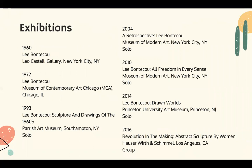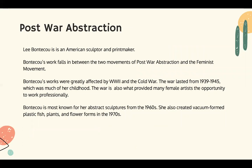Some notable exhibitions of hers, beginning with her first ever one, is the Leo Castelli Gallery in 1960, another in 1972 at the Museum of Contemporary Art, and in 1993 Parrish Art Museum did an exhibition titled Sculpture and Drawings of the 1960s. In 2004, the Museum of Modern Art did a retrospective on Lee Bontecou, and another exhibition they did on her was in 2010 titled All Freedom in Every Sense. In 2014, Princeton University did an exhibition titled Drawn Worlds, and the most recent exhibition she has had is Revolution in the Making: Abstract Sculpture by Women in 2016.